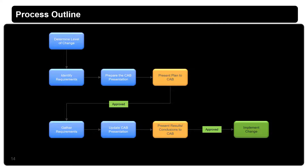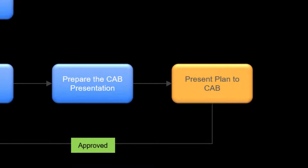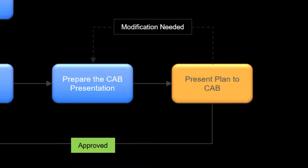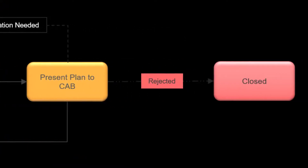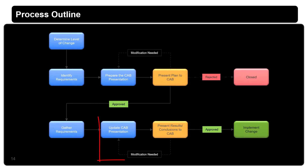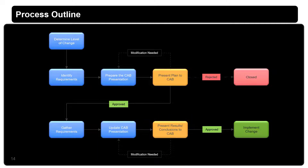This outlines the ideal path for the CAB. However, during the first CAB review, there may be some modifications required for the CAB, or the CAB may be rejected. The CAB may also need some modification during the final CAB review, or the CAB may be rejected based on the results and conclusions.